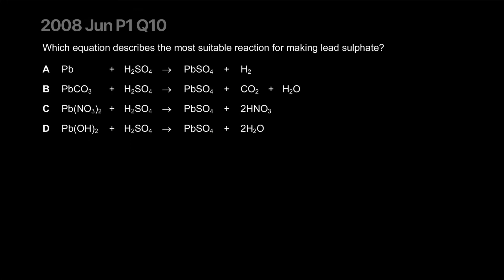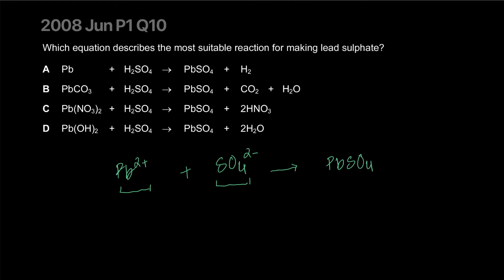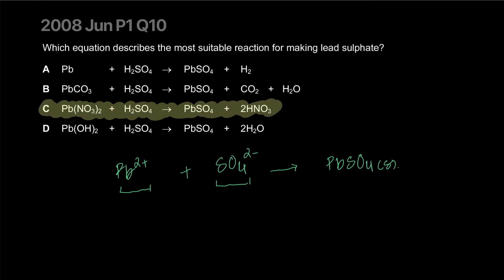Lead sulfate is insoluble — it's not soluble. So the idea is you get the lead ions from a salt that is soluble and you get the sulfate ions from a salt that's soluble. Because as soon as they dissolve, they're just free-floating ions, and as soon as they meet each other, they'll form lead sulfate and, because it's insoluble, it'll precipitate out of the solution immediately. So the easiest way to produce lead sulfate is mixing a nitrate with sulfuric acid or any other soluble sulfate.